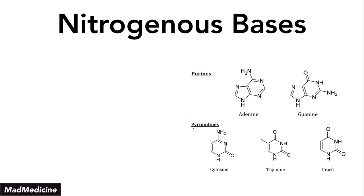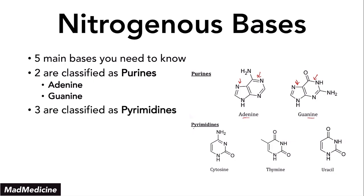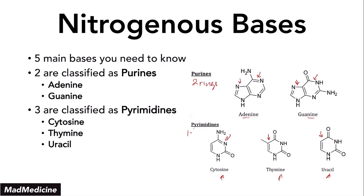These nitrogenous bases are very important. There are five main bases you need to commit to memory. Two of these are classified as purines — they have two ring structures — and those two are adenine and guanine. The other three are pyrimidines — cytosine, thymine, and uracil. Pyrimidines have only a singular ring structure, whereas purines have two rings.